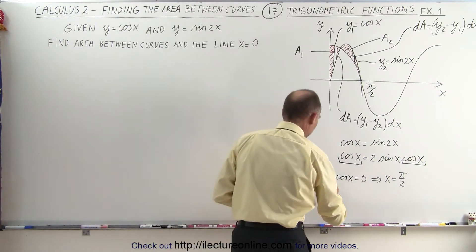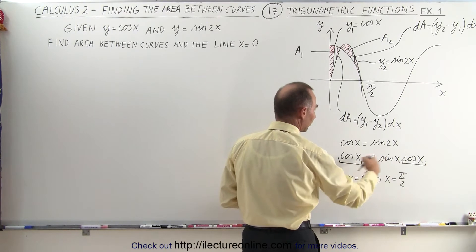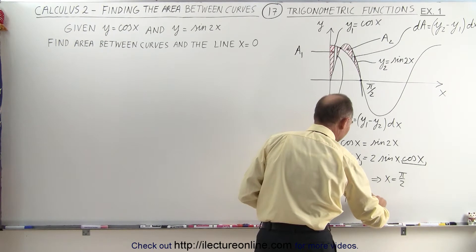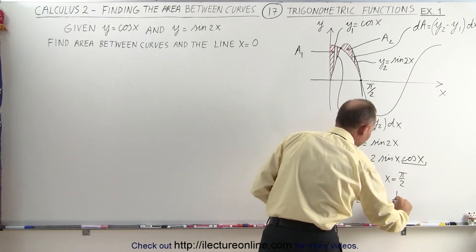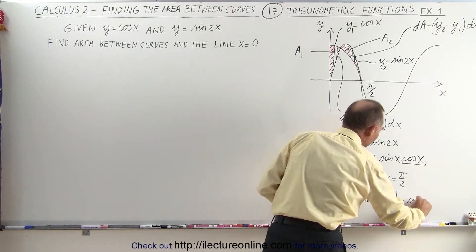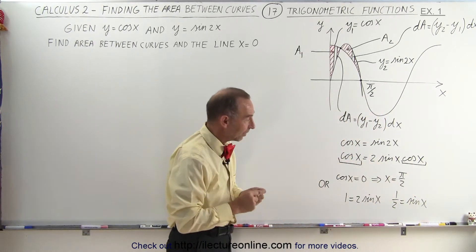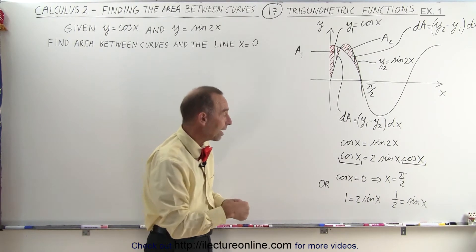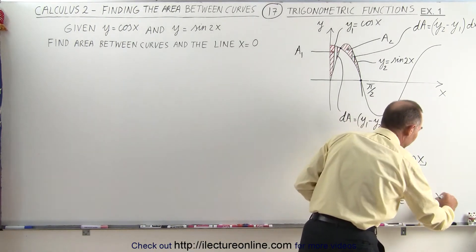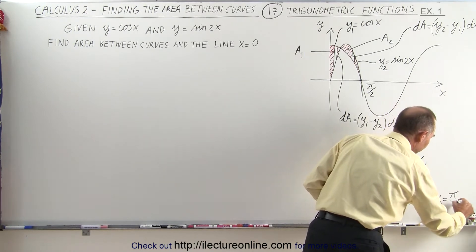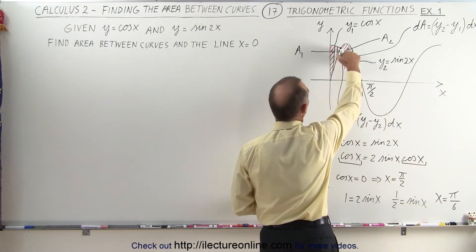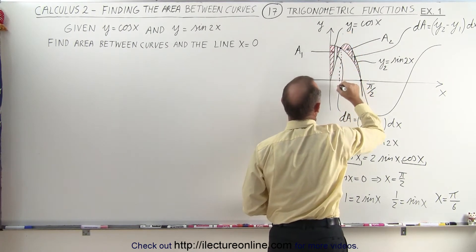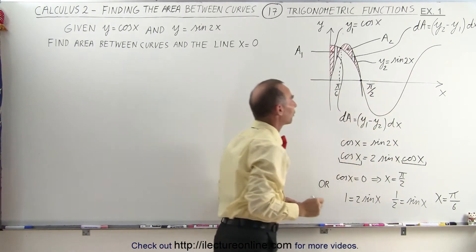The second possibility is to divide both sides by cosine of x. That gives 1 equals 2 times sine of x, or sine of x equals one half. The angle x must be 30 degrees since sine of 30 degrees is one half, which means x equals pi over 6. So we have the two intersection points: x equals pi over 6 and x equals pi over 2.